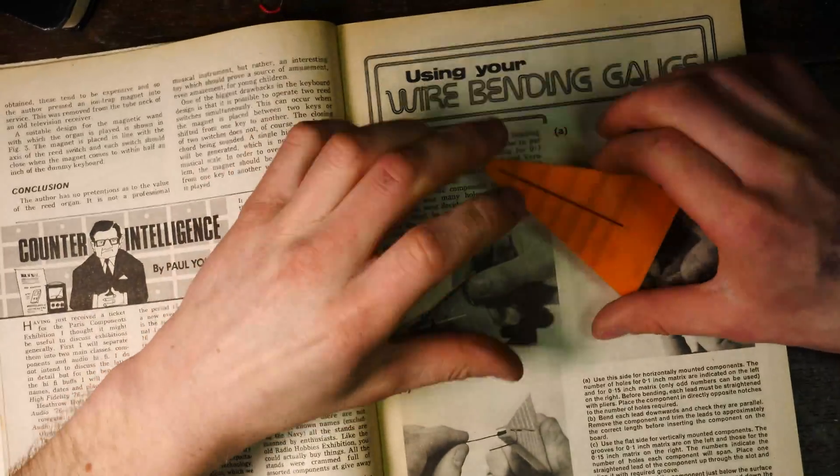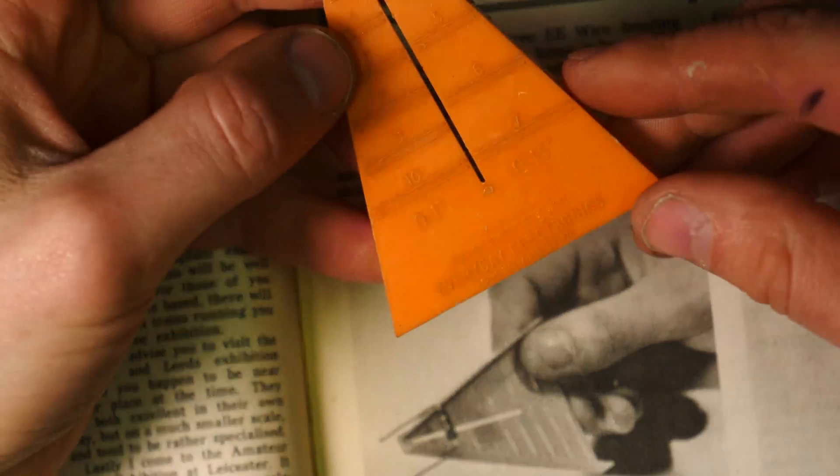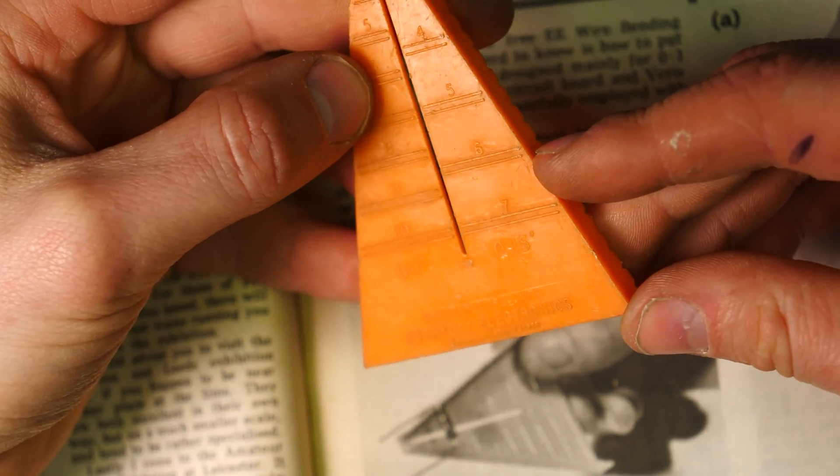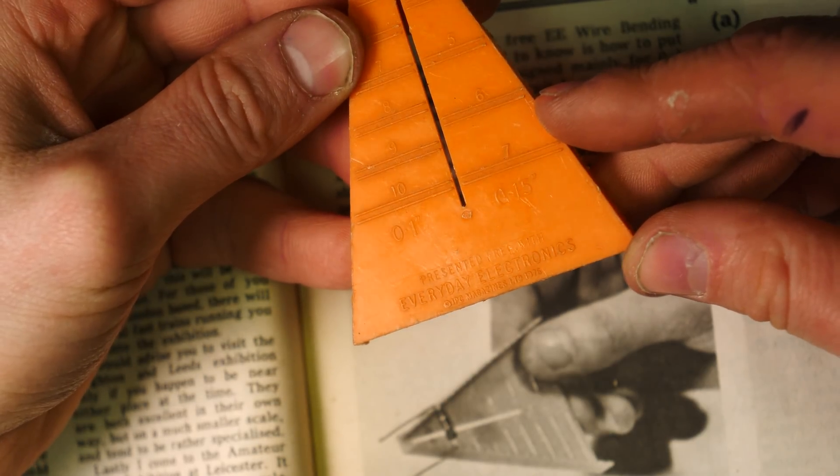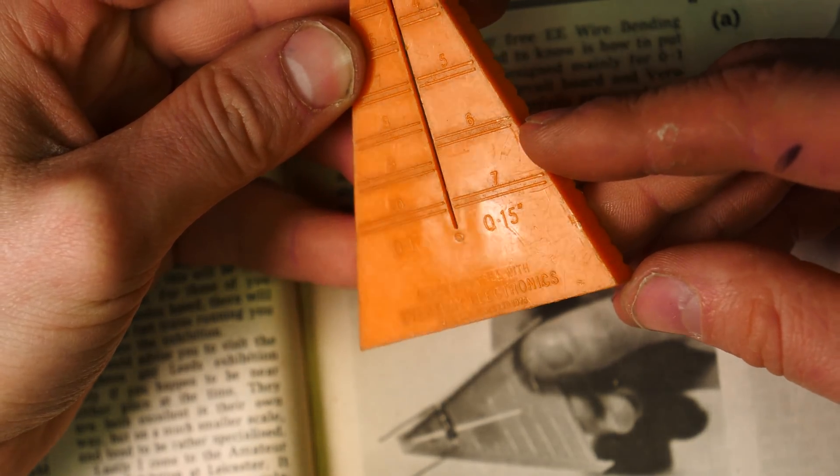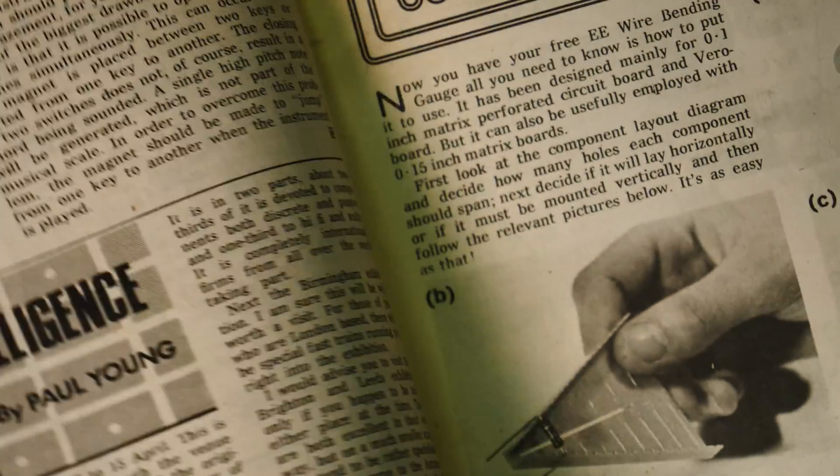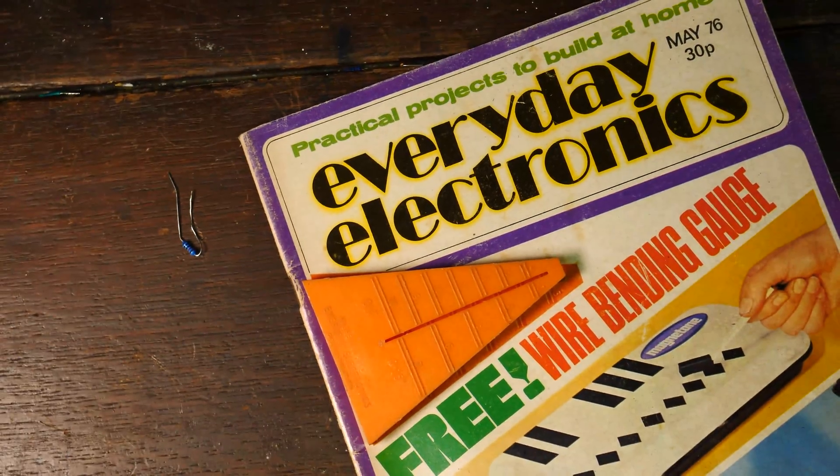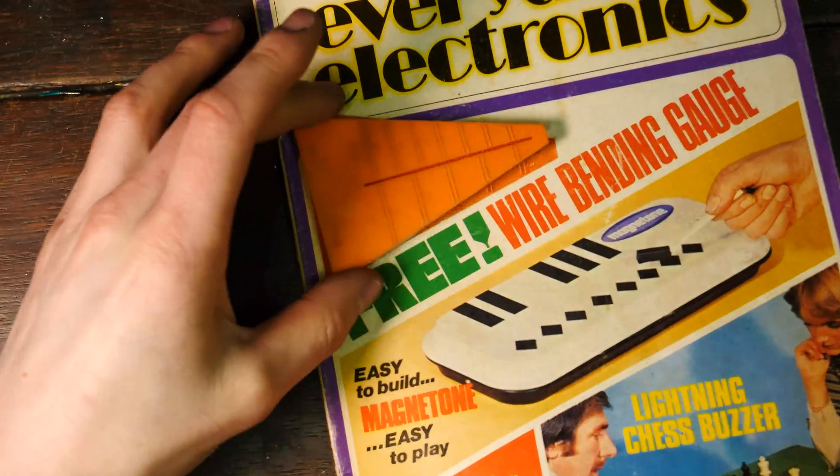This is the page on it and I've just realized something really cool. Have a look at this. If you shine it, if you look, I'll get the light right. It says, get it right. It says Everyday Electronics presented free with Everyday Electronics. That's cool. That came with this magazine. Just how cool is that? That was probably sat there on the magazine. I'm not sure where it might have been in a bag or something.